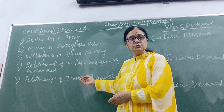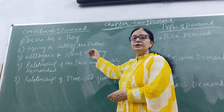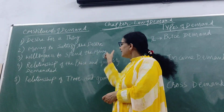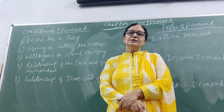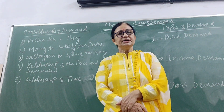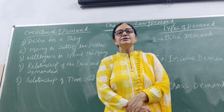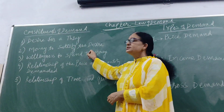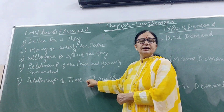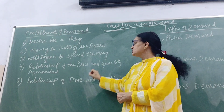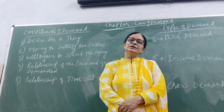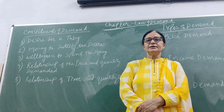So when all the elements exist together, then we say that there is demand for the commodity. The demand for a commodity exists when the consumer is ready to spend money at a particular price and at a particular time to purchase it. That is called demand.